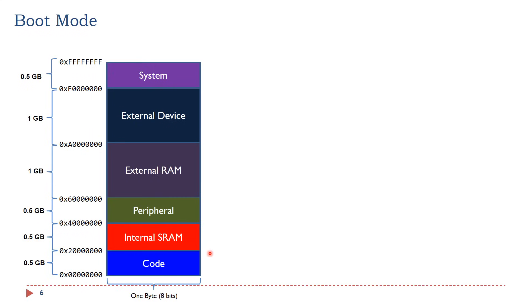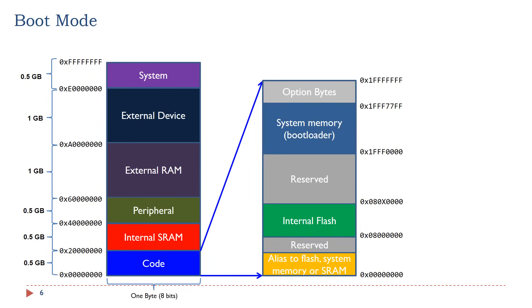Here is the memory map of ARM Cortex-M processors. The address range of each memory region is fixed. The code region ranges from 0 to 0x1FFFFFFF in hex. The top area is the ROM region reserved to store bootloaders. The middle area is the in-chip flash memory. The bottom area is an area that can be physically mapped to the internal flash, system memory, and internal SRAM. The starting address of internal flash memory is 0x08000000 in hex, and the address of the system memory starts at 0x1FFF0000 in hex.